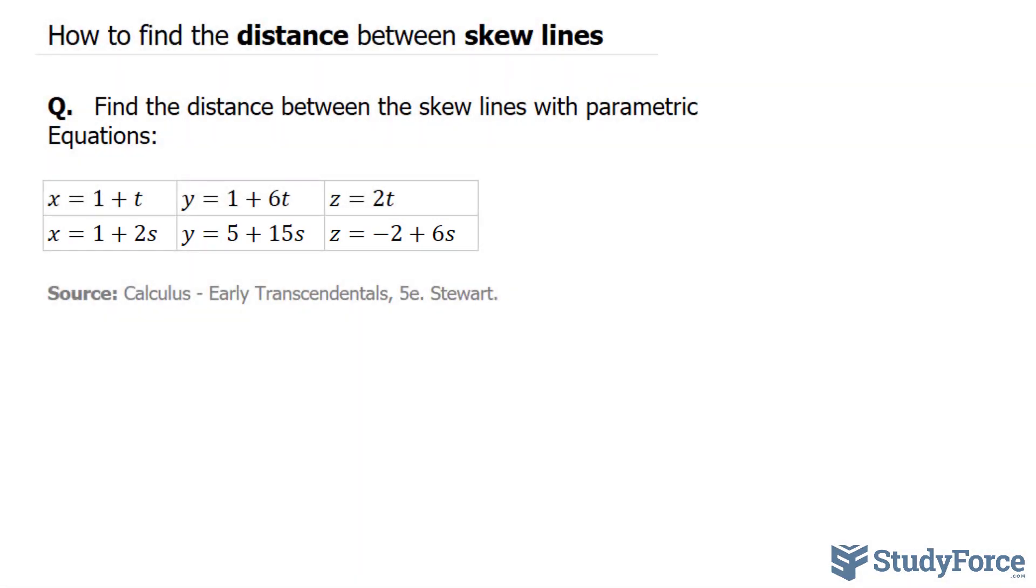To extract the direction vector of these three parametric equations, the first three, all you have to do is look for the coefficients in front of T. So the coefficient here is 1, that's 6, and that's 2. So the direction vector, V1, has the x, y, and z components of 1, 6, and 2, respectively.